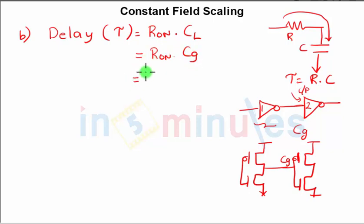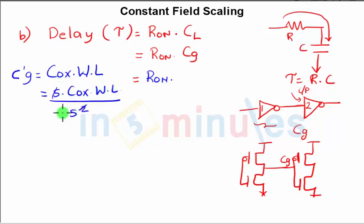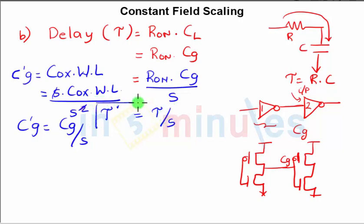We just derived that Ron in constant field scaling remains exactly the same, whereas the gate capacitance, when we started the clips on constant field scaling, was C'G = Cox · W · L, where W and L are reduced by a factor of S, so CG was reduced. The delay of the circuit after scaling has gone down by a factor of S, which is a very important achievement.